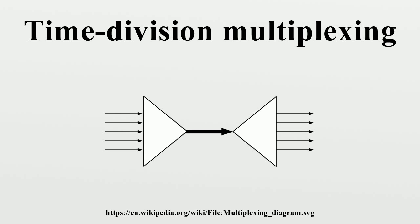Time division multiplexing is used primarily for digital signals, but may be applied in analog multiplexing in which two or more signals or bit streams are transferred appearing simultaneously as sub-channels in one communication channel.